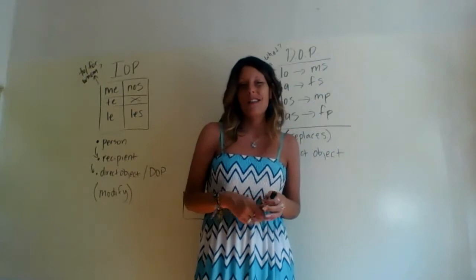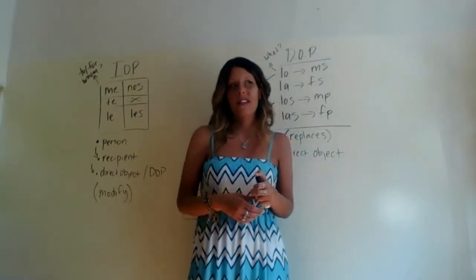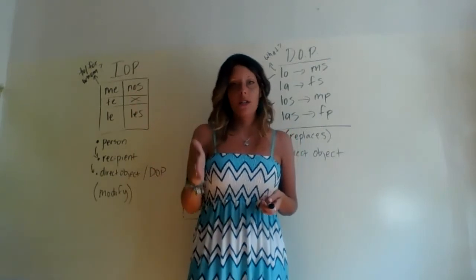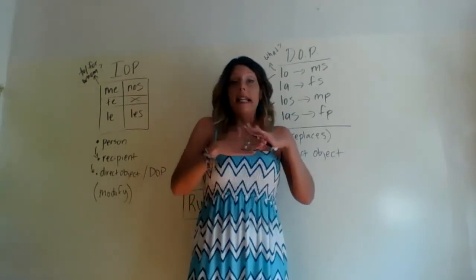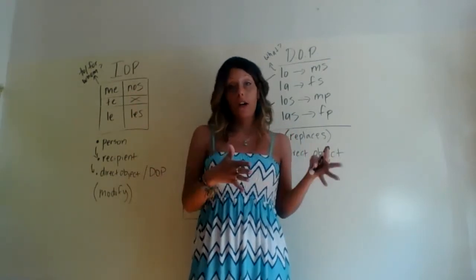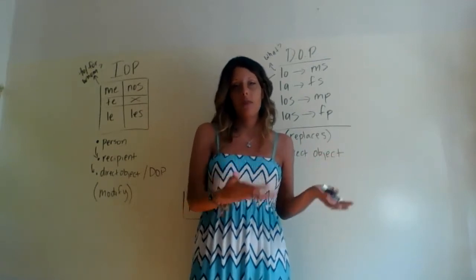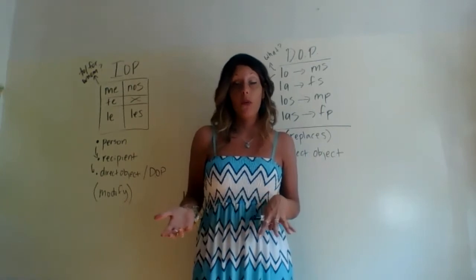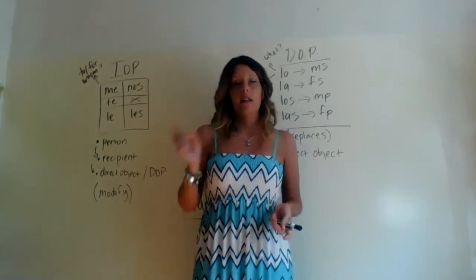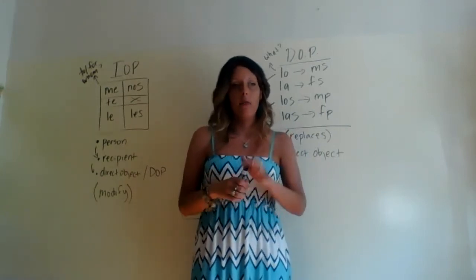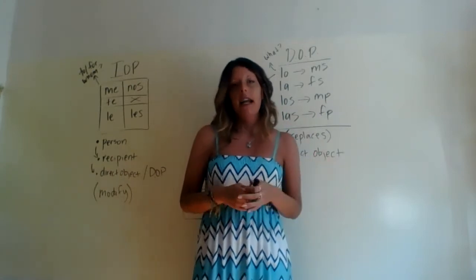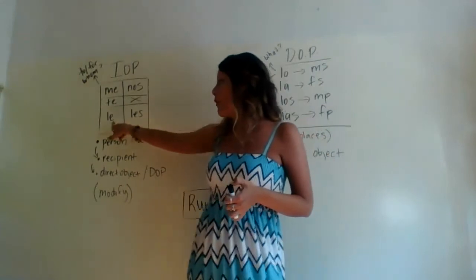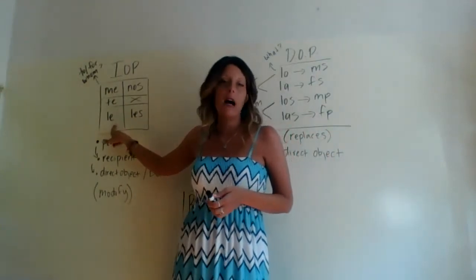And then 'to Laura' — in English it would become 'to her,' which is an indirect object pronoun that replaces the recipient Laura. But in Spanish, we're still going to keep Laura's name in there and just modify Laura, the recipient, with the IOP. So notice that does not work the same way.